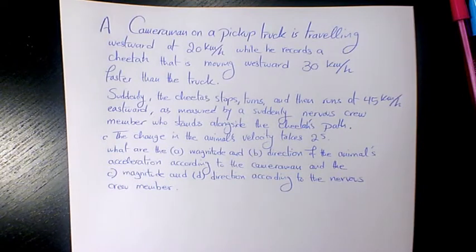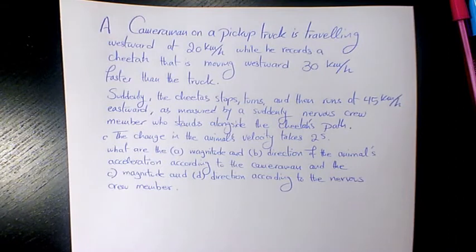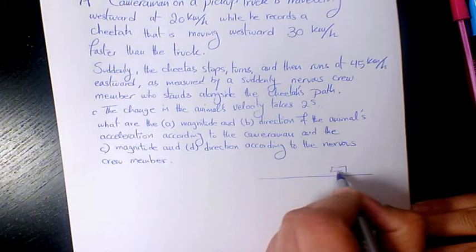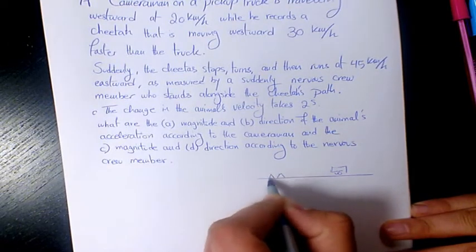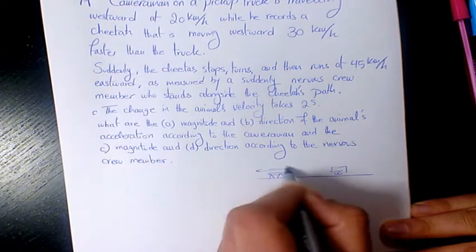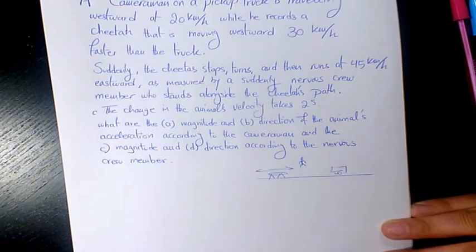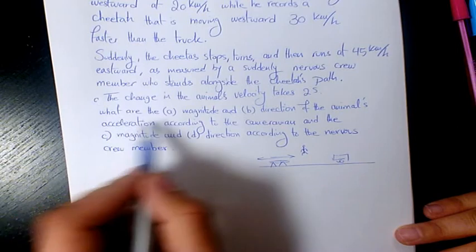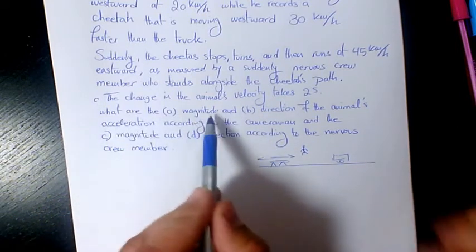What we need to find: the magnitude and direction of the animal's acceleration according to the cameraman on the truck, and also the magnitude and direction according to the nervous crew member who is standing alongside. The truck and the cheetah are moving this way, and the cameraman and nervous crew member are positioned here.